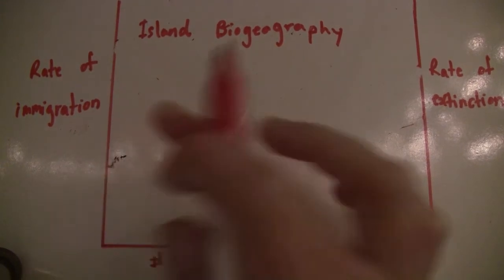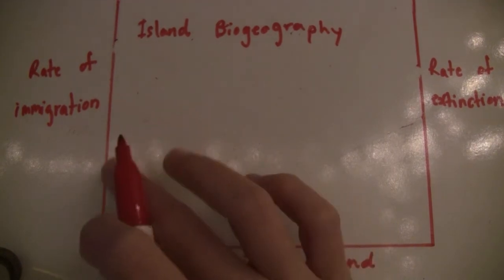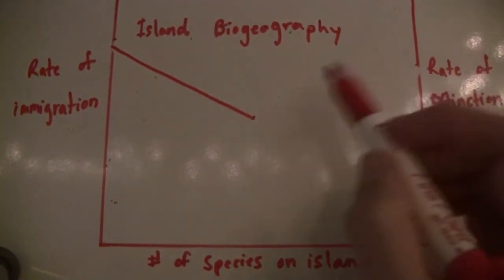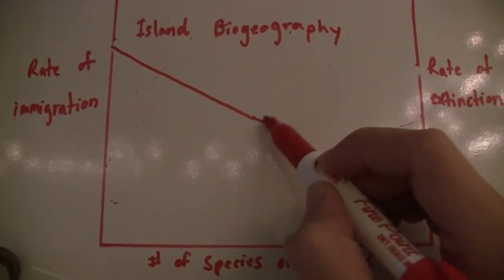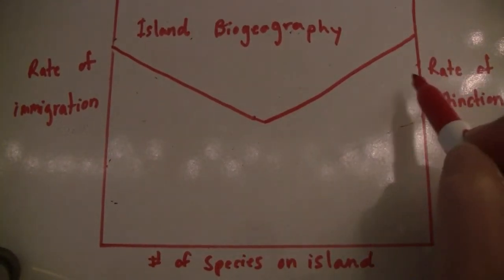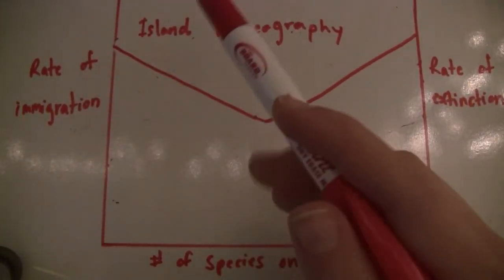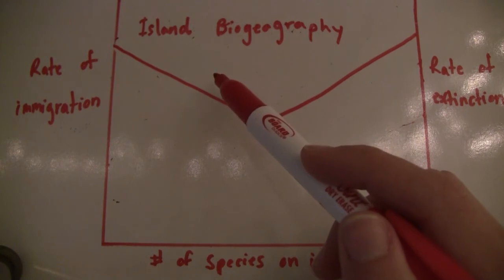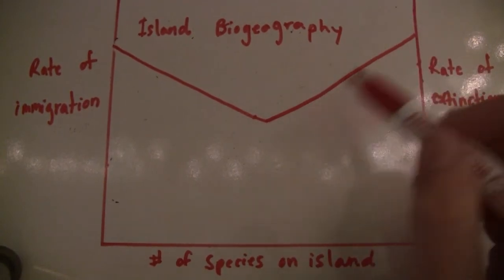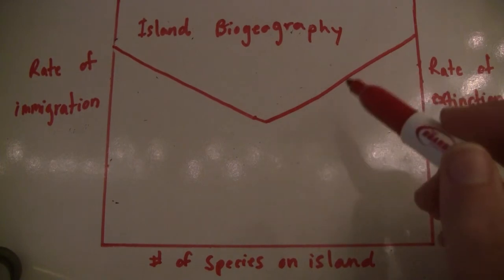We can also look at the case of an island close to the mainland but small. If it's close to the mainland, the rate of immigration is going to be high. But if it's a small island, the rate of extinction will also be high because of the population size.